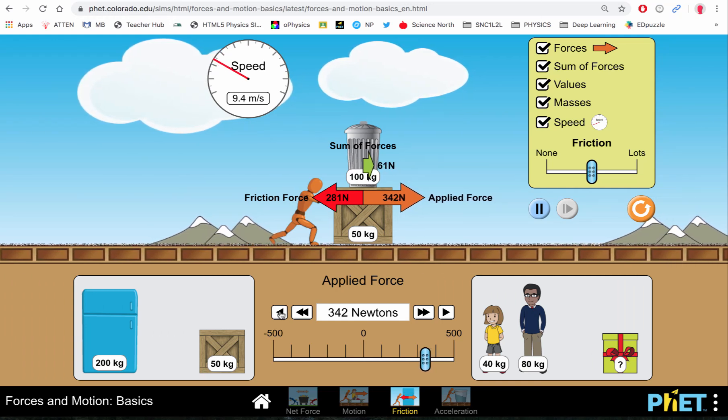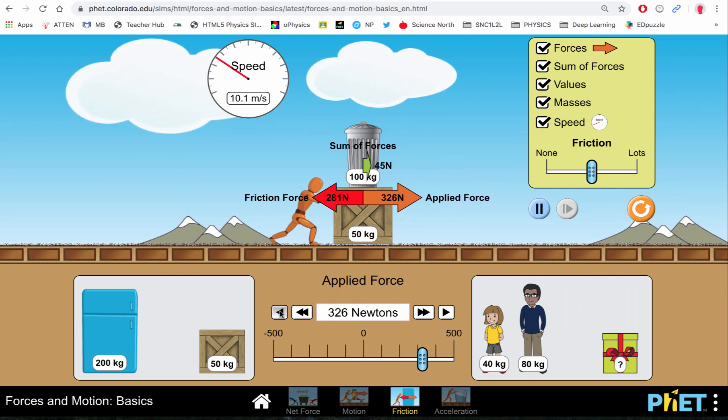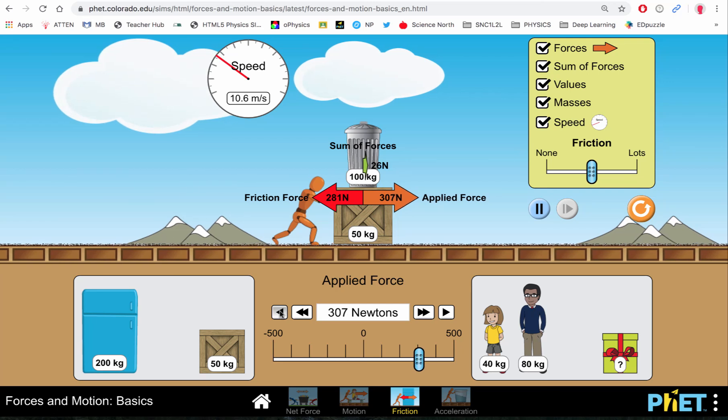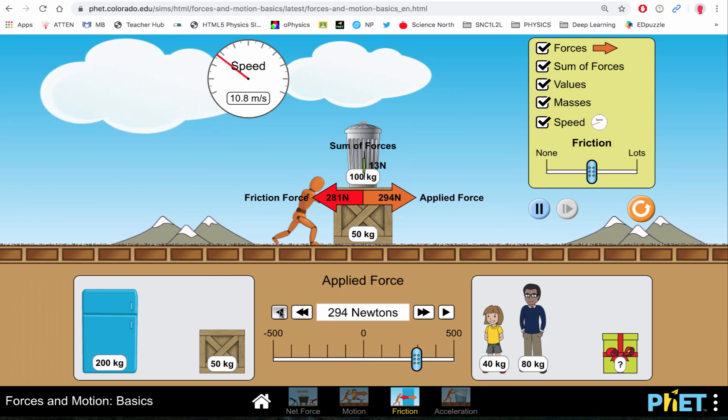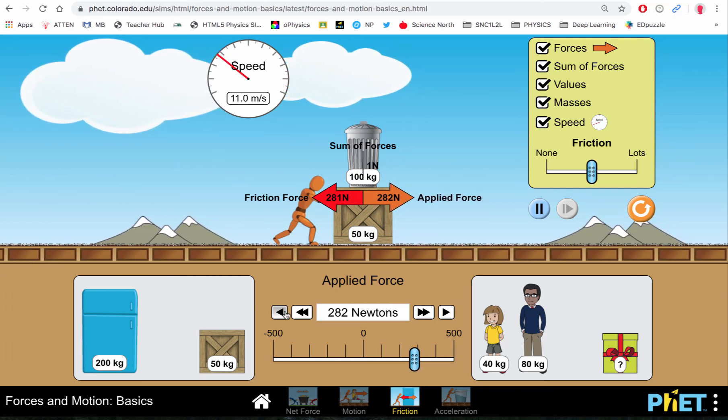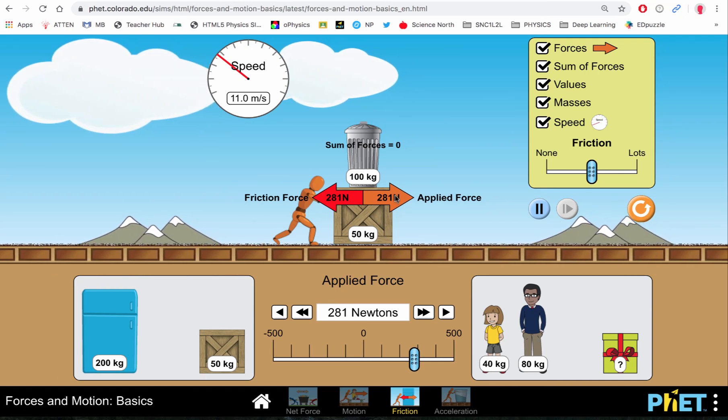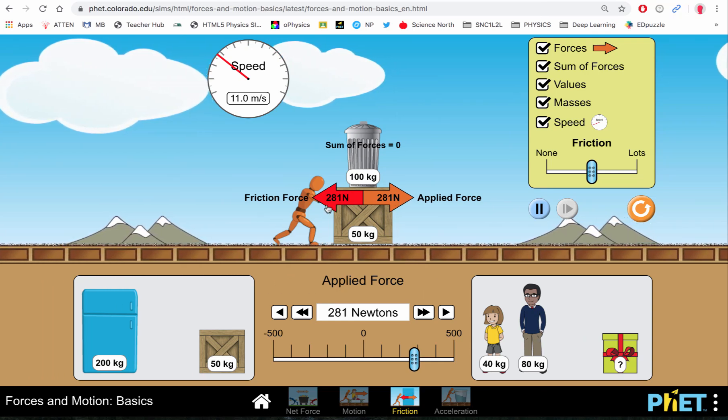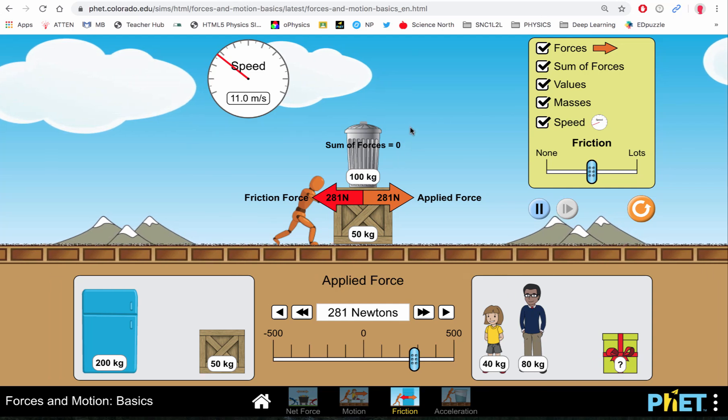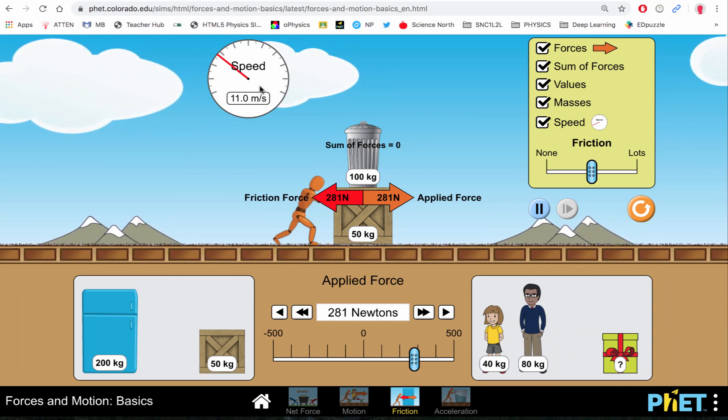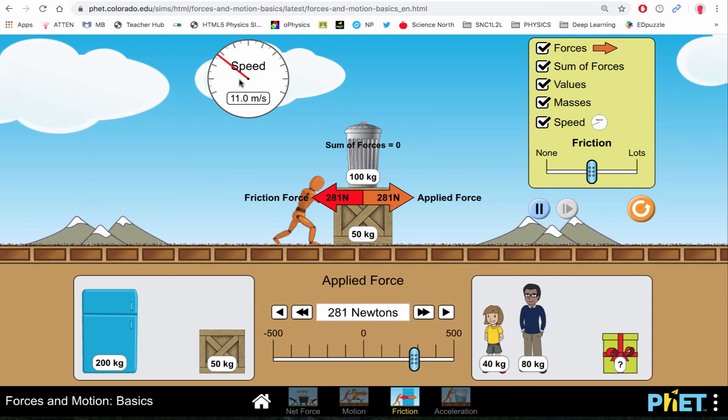And we will continue to move on at a constant speed. So now my forward applied force and the frictional forces are exactly the same, which means we have no net force and we are undergoing uniform motion.